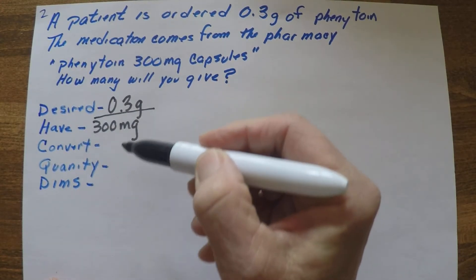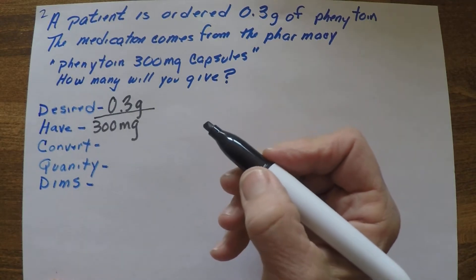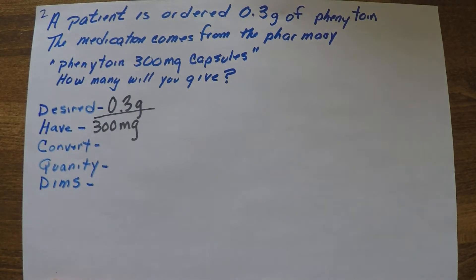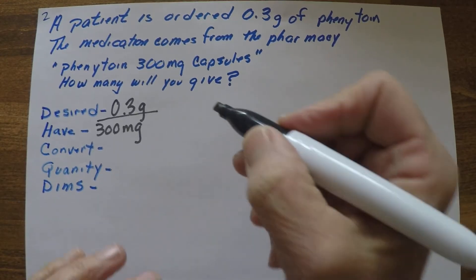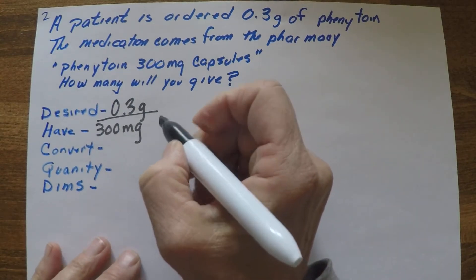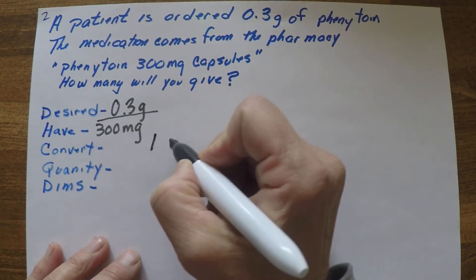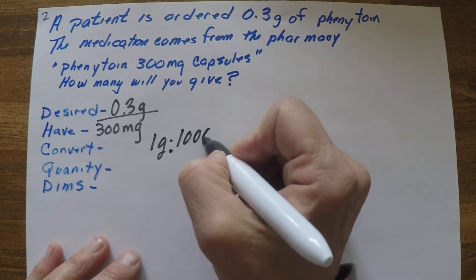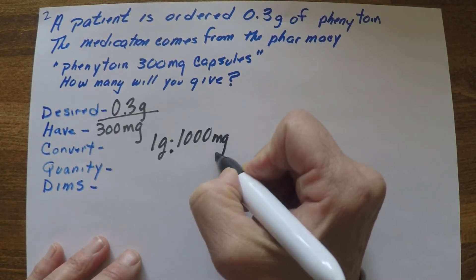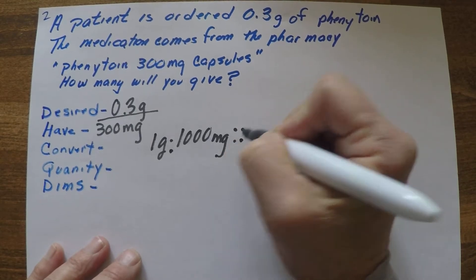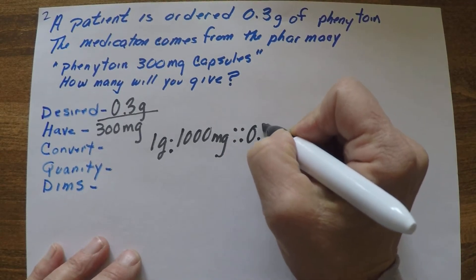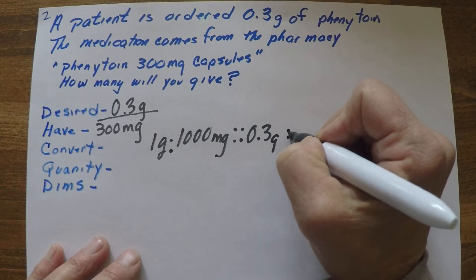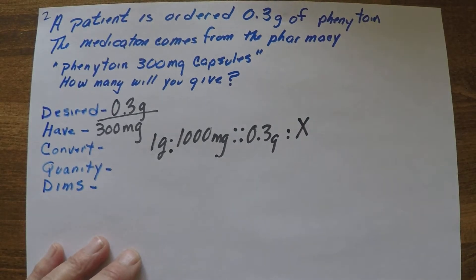Because remember with the desired over have, we have to have the same unit. So we have to convert. I like to use ratios - you can use proportions or any way that you want to make that work out. So for a ratio I'm going to put one gram - I'm going to put down what I know first - is a thousand milligrams, and that's going to be the same as 0.3 grams as to X.